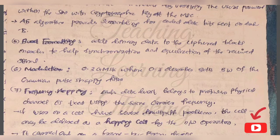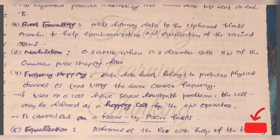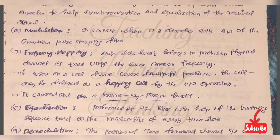Now the modulation is 0.3 GMSK, where 0.3 describes 3dB bandwidth of Gaussian pulse shaping filter. This is the Gaussian pulse shaping filter, modulated at 0.3dB. Each database belongs to a particular physical channel and is transmitted using the same carrier frequency.